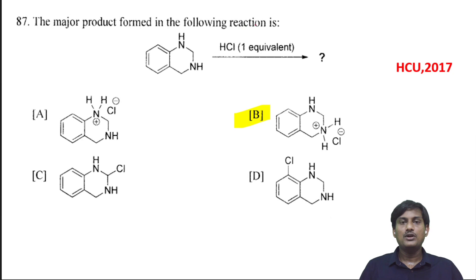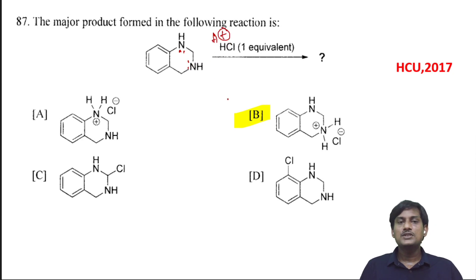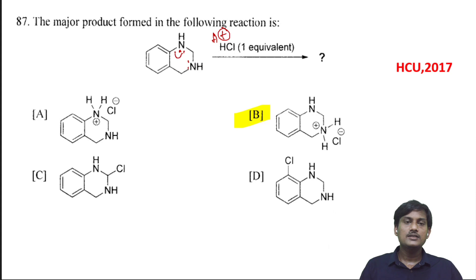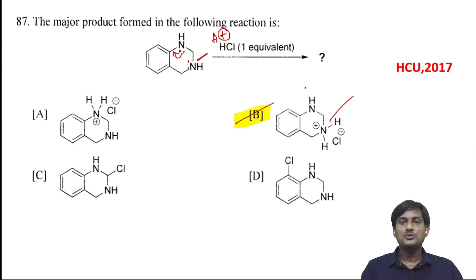The major product formed in the following reaction: the compound has lone pairs at two nitrogen sites. To identify which site is more nucleophilic or more basic — one nitrogen has delocalization of its lone pair into the ring, but the other nitrogen does not have delocalization. So protonation takes place at the nitrogen without delocalization, and this is the product obtained.